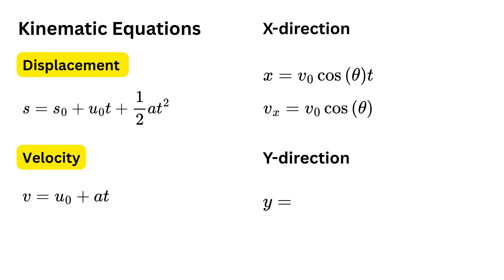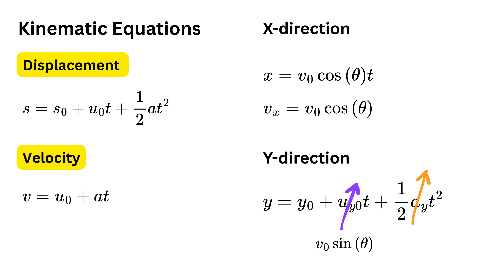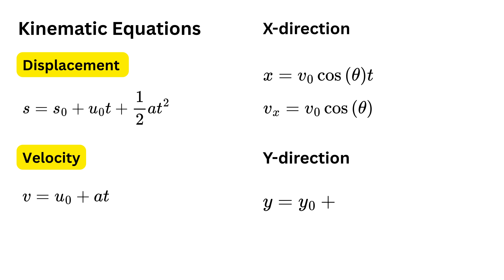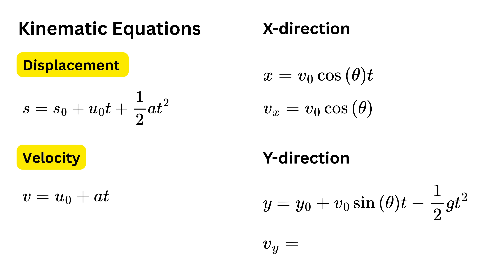For the y direction: y equals y₀ plus u_y₀ · t plus half a_y · t². Here y₀ is the height of the cliff, u_y₀ is v₀ sin theta, and a_y is negative g. So the equation becomes y equals y₀ plus v₀ sin theta · t minus half g t². For the vertical velocity: v_y equals u_y₀ plus a_y · t, which gives v_y equals v₀ sin theta minus g · t. A positive v_y means the projectile is still going upward; a negative value means it has started coming down.